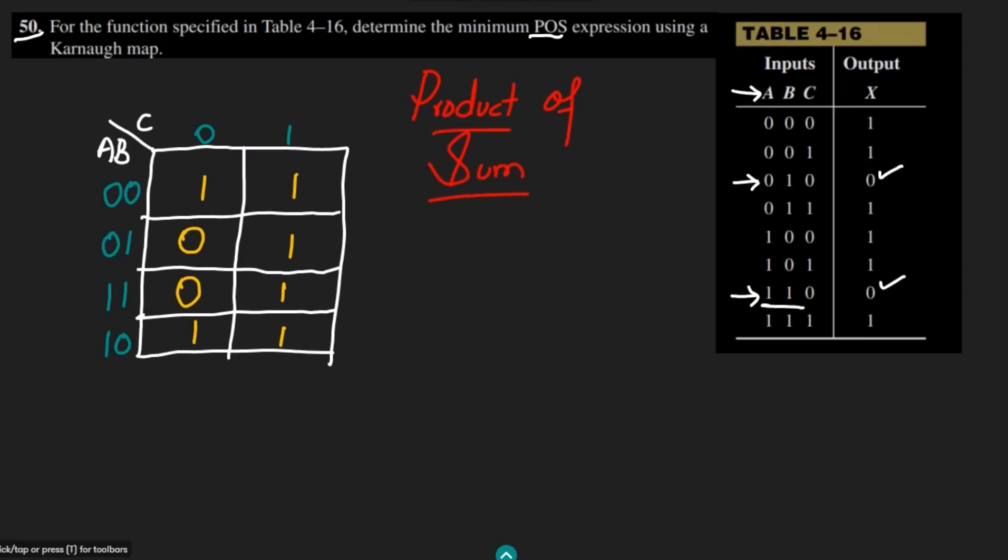...we are having this Karnaugh map. What I have to do is take the 0s and simplify it from this Karnaugh map. Here I can see that these are the 0s. To simplify the POS expression, I have to write the sums which should give me 0s.